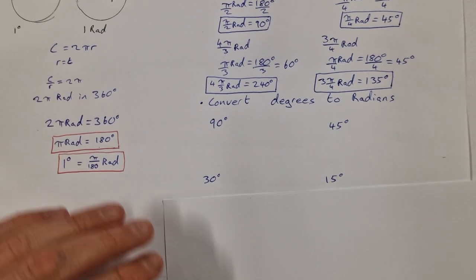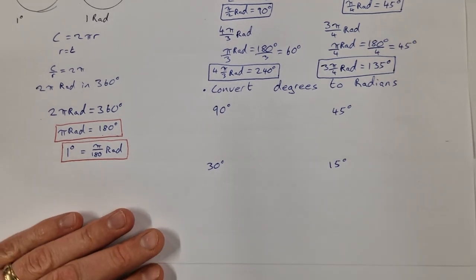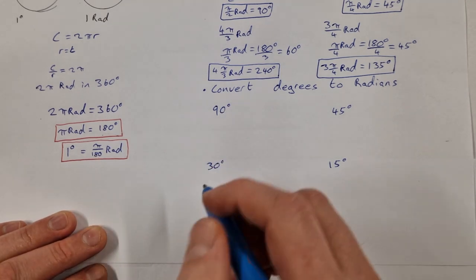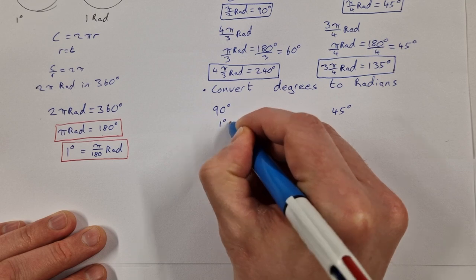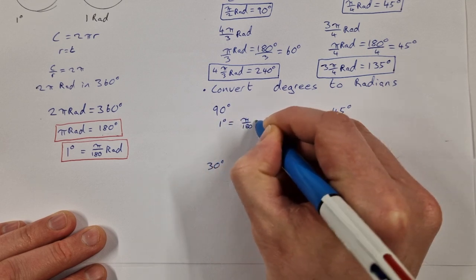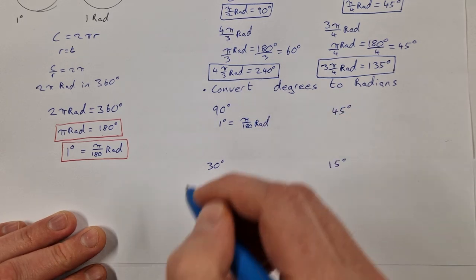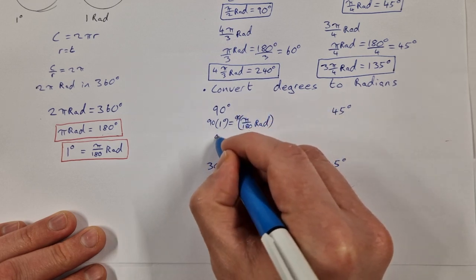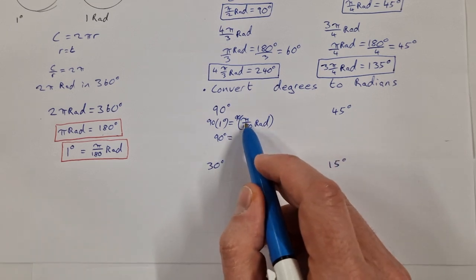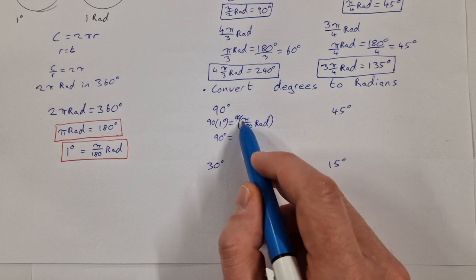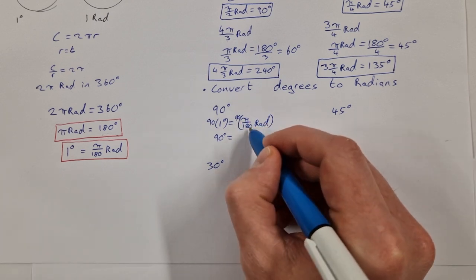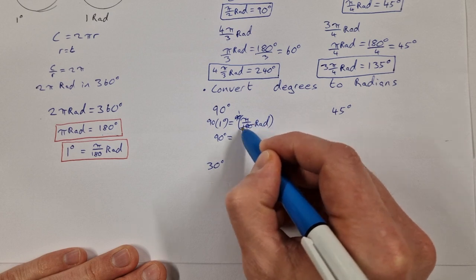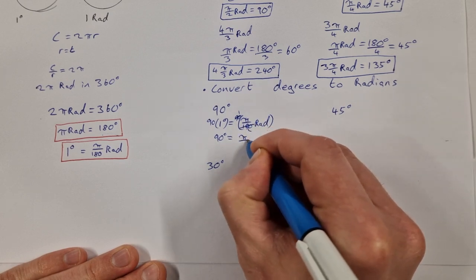Now let's convert from degrees into radians. The base formula I'll use is: 1 degree equals π/180 radians. For 90 degrees, I multiply both sides by 90. That gives 90 degrees equals 90π/180. Since 90 over 180 simplifies to one half, 90 degrees equals π/2 radians.